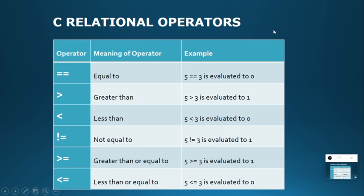Coming to relational operators: these are used to compare two operands. For example, if a comparison is true it will give zero, and if false it will give one. There are six relational operators: equal to (==), less than (<), greater than (>), not equal to (!=), greater than or equal to (>=), and less than or equal to (<=).